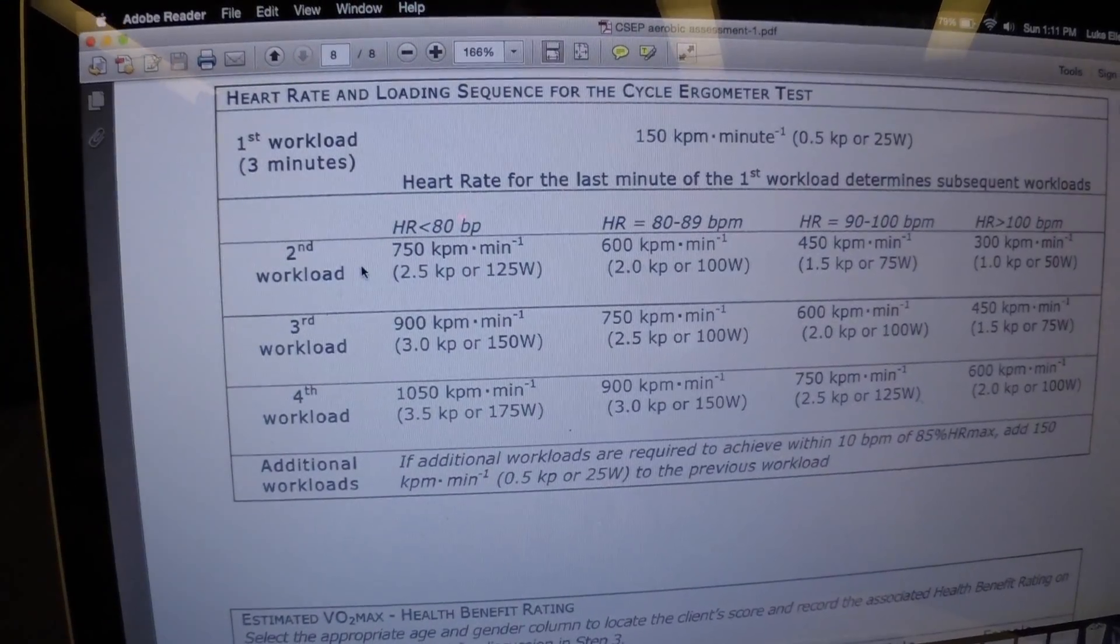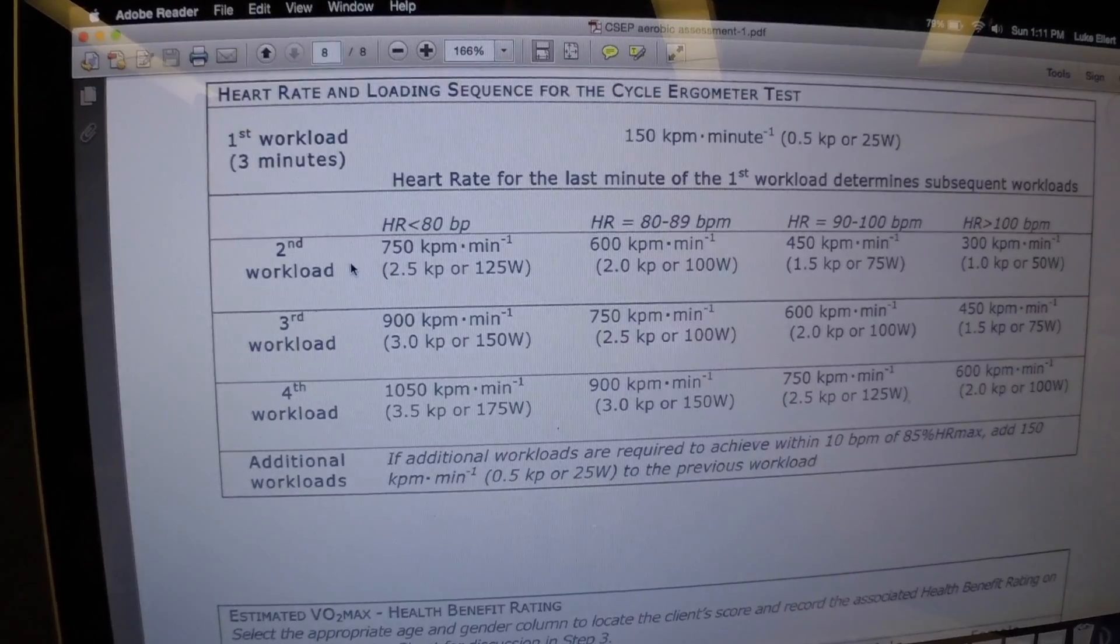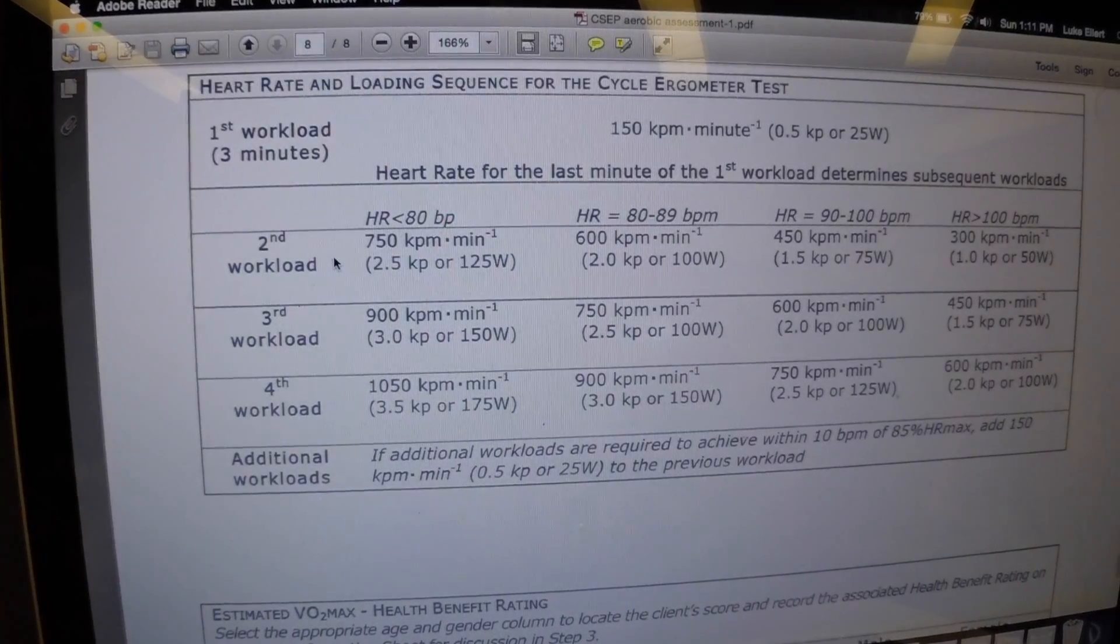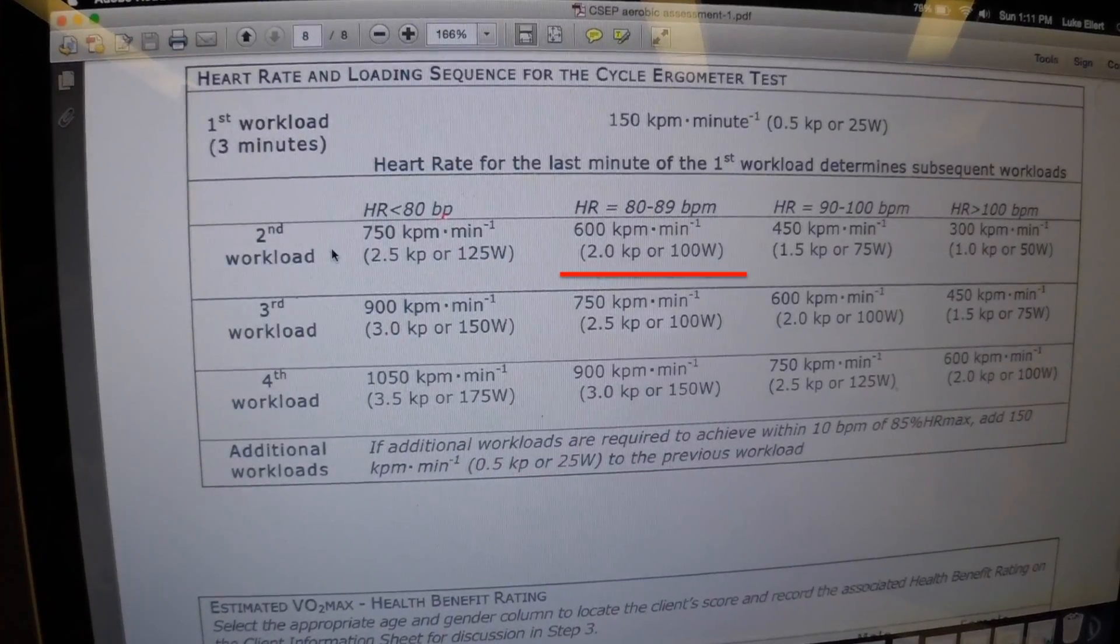Note that if steady state heart rate was not achieved, then extend the test minute by minute until it is. In this case, their heart rate put them in the 2 kilopond category.